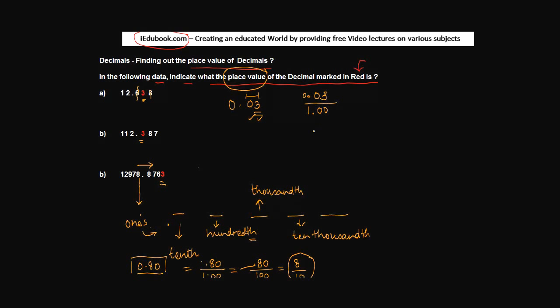Now because both the numerator and the denominator have same number of decimals, we can remove this decimal point from here and here. And we will get 3 upon 100. Or this is 3 out of 100. So we say this is 3 hundredth. The place value of 3 is 3 hundredth.